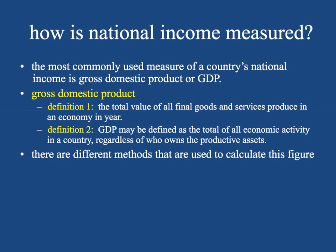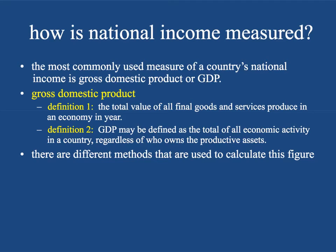So here we go. First of all, the most commonly used measure of a country's national income is something called the gross domestic product, or GDP. You may have heard of this before, but there are two main ways of thinking about it. Definition number one: gross domestic product is the total value of all final goods and services produced in an economy in a given year. You figure out the value of all the goods and services — a private school education, a water bottle, an iPad, a key, a book, a table, a backpack, a chair — and you add all that up to get GDP.